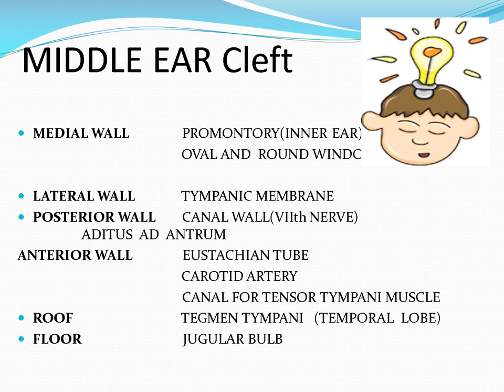The medial wall contains the promontory, oval window, and round window. The lateral wall is made up of the tympanic membrane. The posterior wall is deficient superiorly — that is the aditus to antrum — connecting the middle ear to the mastoid cavity. The posterior medial wall is the partition between the middle ear and mastoid. The floor contains the jugular bulb with a bony partition between it and the middle ear. Any breach in these structures can lead to severe complications.